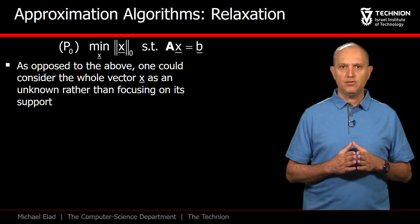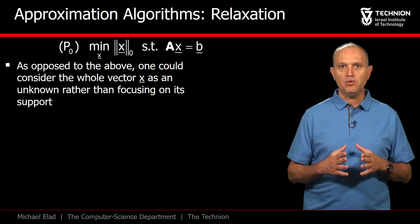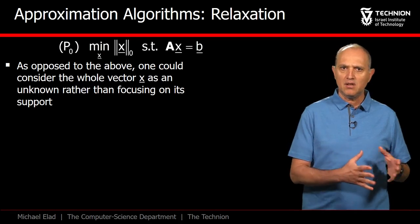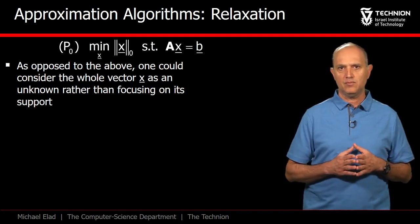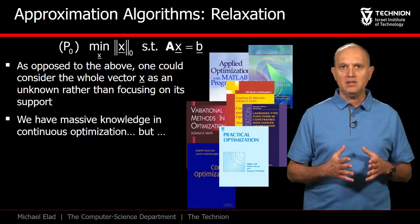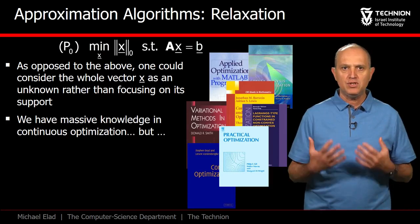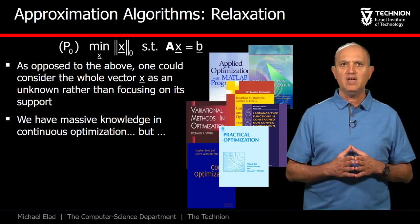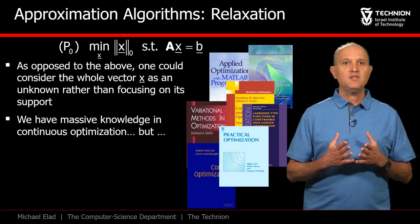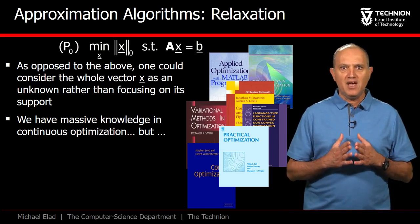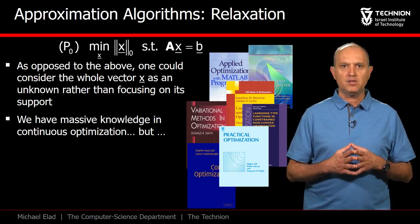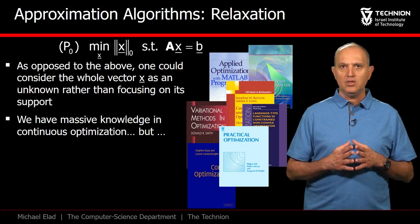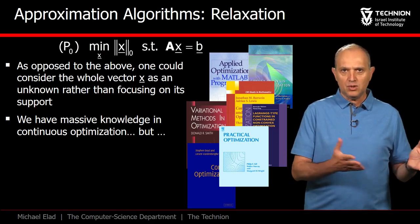There is an alternative to the greedy approach, in which we focus on the unknown x, disregarding the discrete nature of its support. P0 can be regarded as yet another continuous optimization problem, among many that we have seen in the past. In the last 50 years, we have gained a lot of know-how in methods for handling such tasks. So why not use this knowledge in solving P0?